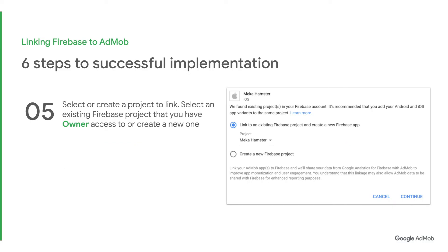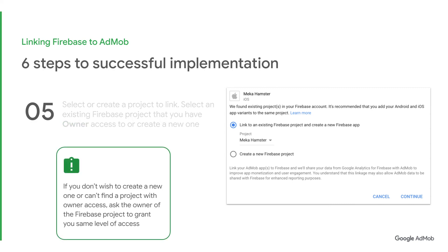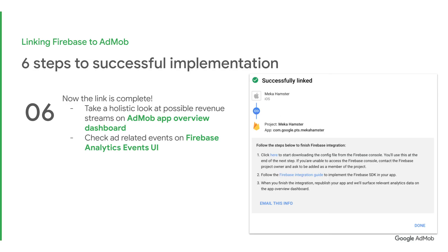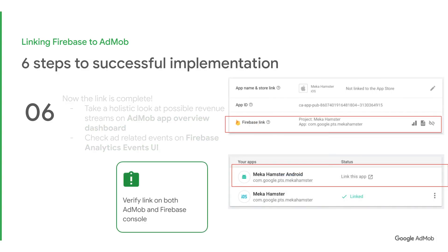Step 5: Now that you have linked Firebase to your app, you can proceed to select or create a project to link. Do remember to select an existing Firebase project which you have owner access to, or alternatively, create a new one. If you don't wish to create a new one and can't find a project with owner access, you need to ask the owner to grant you the same level of access. Step 6: Now the link is officially complete. You can take a holistic look at the possible revenue streams on the AdMob App Overview dashboard and check ad-related events on Firebase Analytics Events UI. You can verify the link on both the AdMob and Firebase console.